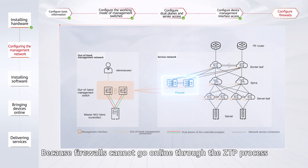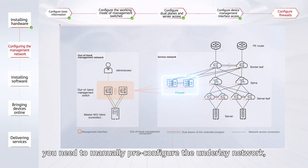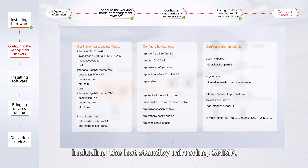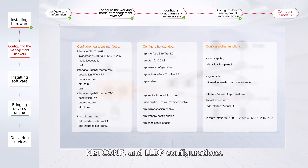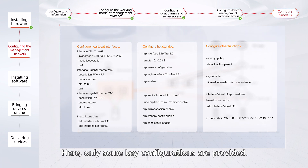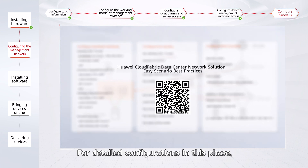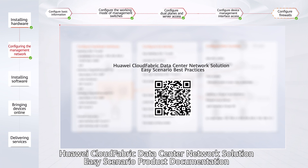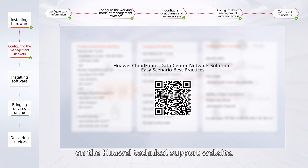Because firewalls cannot go online through the ZTP process on iMaster NCE Fabric, you need to manually pre-configure the underlay network, including the hot standby mirroring, SNMP, NETCONF, and LLDP configurations. Here, only some key configurations are provided. For detailed configurations in this phase, you can refer to the Huawei CloudFabric Data Center Network Solution Easy Scenario product documentation on the Huawei Technical Support website.